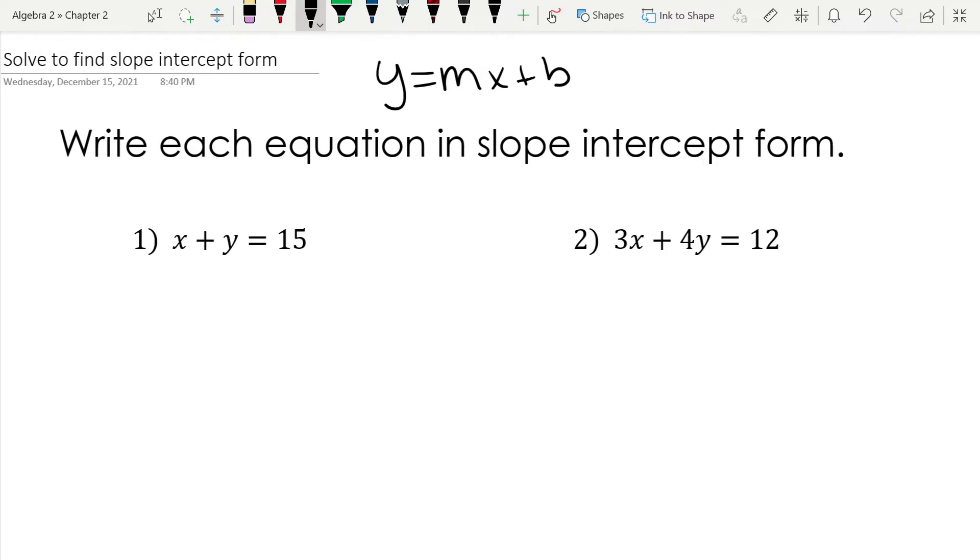Let's look at number one, x plus y equals 15. I'm going to rewrite it here, x plus y equals 15. Now, when I look at my formula, I notice that y is by itself. So I have x plus y on the left side of the equal sign. I want to get rid of the x. Since it's a positive x, I'm going to subtract x from both sides.